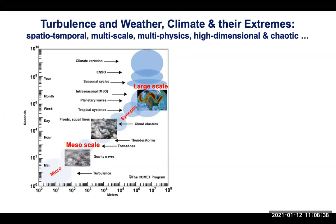Other challenges are that it's very high dimensional, and most often there are multiple physical processes interacting with each other. These are some of the challenges in weather and climate modeling: turbulence, the multiscale nature of turbulence, high-dimensional systems, and the fact that they're so chaotic — a very small error in your initial condition can very quickly blow up and render your predictions useless in a few time steps.